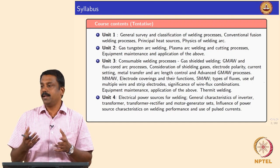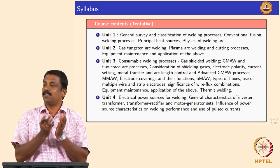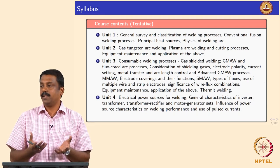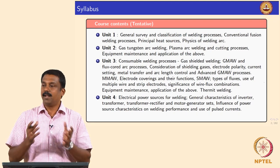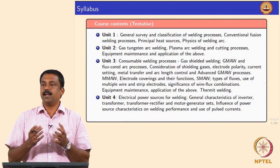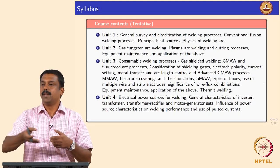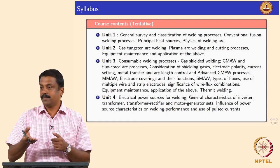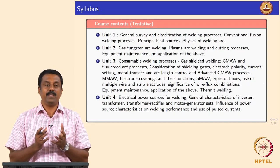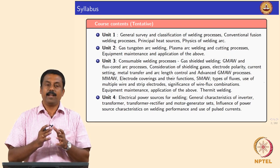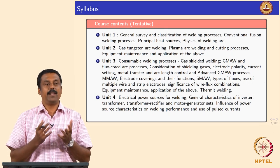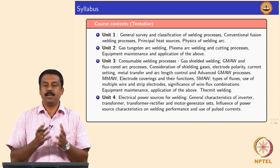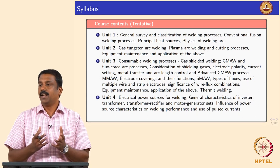The third unit is on consumable welding processes. In gas tungsten arc welding the tungsten electrode is not molten, whereas we can also strike an arc with a consumable electrode — those processes are known as gas metal arc welding, manual metal arc welding, or shielded metal arc welding. We look at the variants of these processes, how the molten consumable is transferred onto the weld pool, the forces acting on a droplet when it detaches from the tip of the electrode, how we can manipulate forces to change droplet shape, and how we can increase productivity by varying welding parameters.